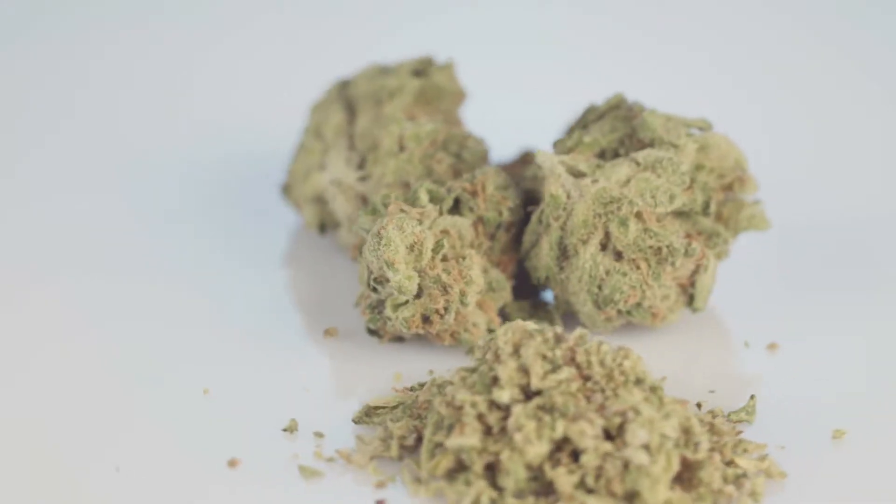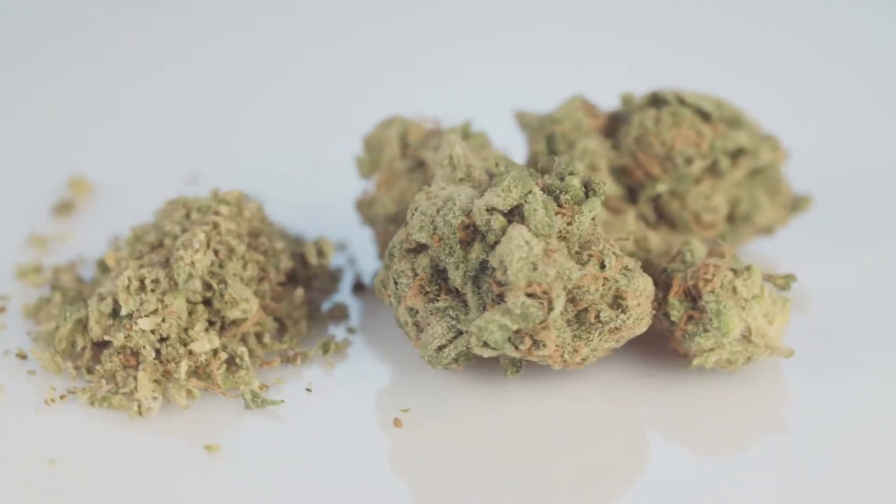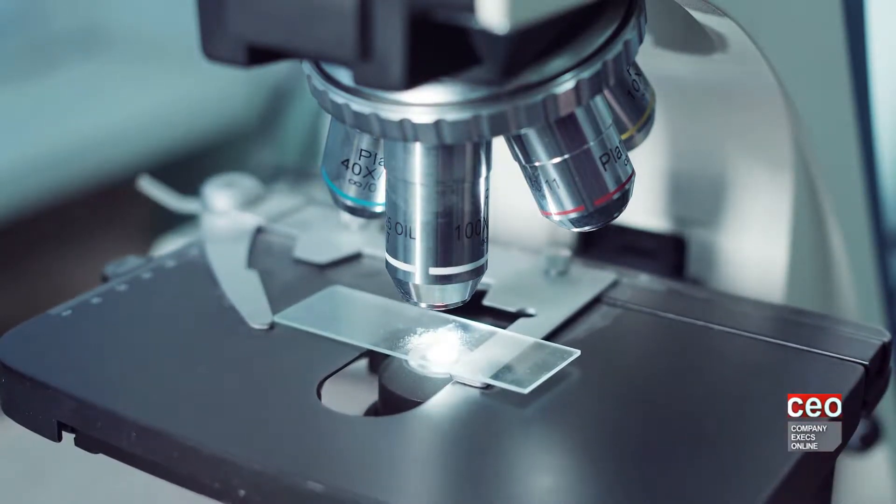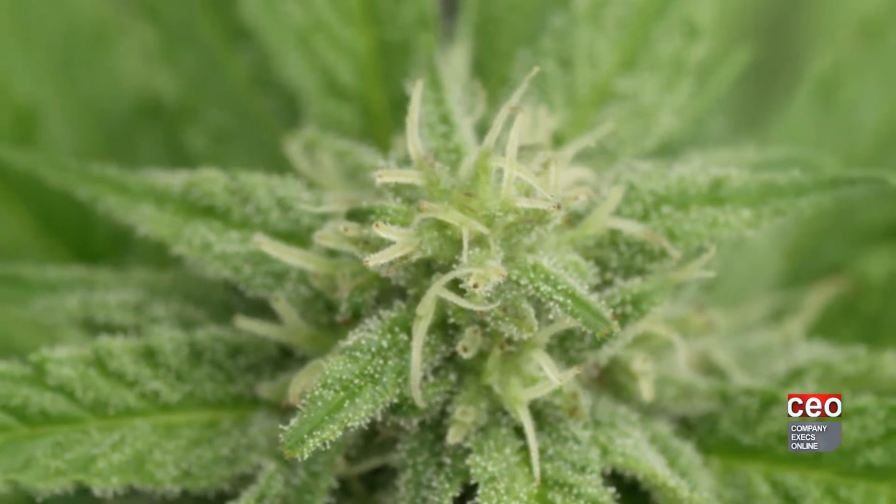We are doing that through a variety of different revenue streams that we control in-house. One is the development of seed and live tissue culture, which we can sell independently through seed banks around the world and use for ourselves to do two things. First is to retain the quality of the product and make sure that we do not have any gaps in our production schedule.